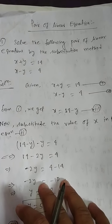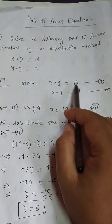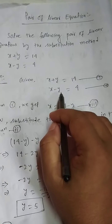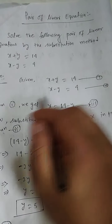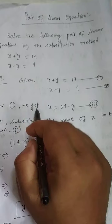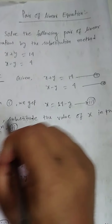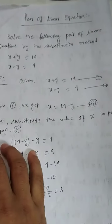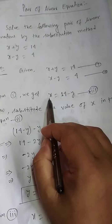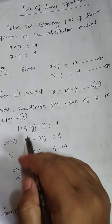Solution: the given equations are x plus y equals 14 — this is equation number 1 — and x minus y equals 4 — this is equation number 2. From equation number 1 we get x equals 14 minus y; this is equation number 3.